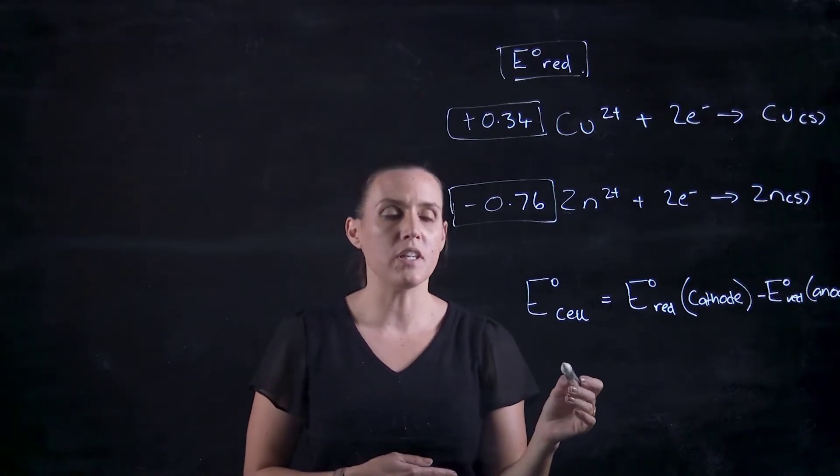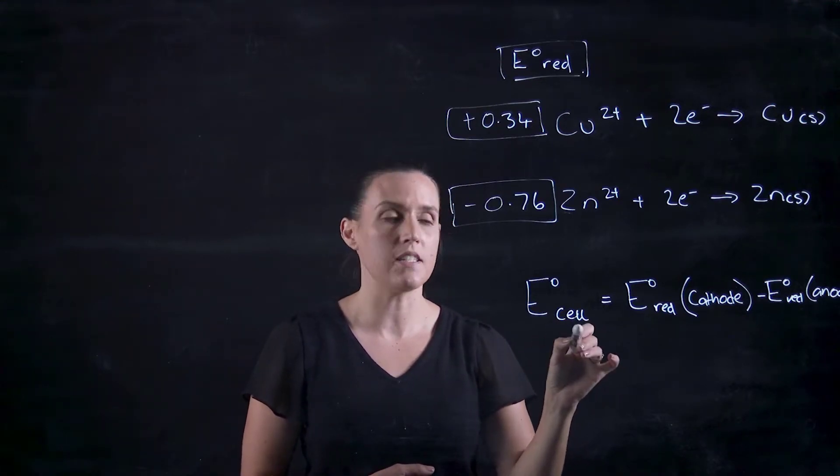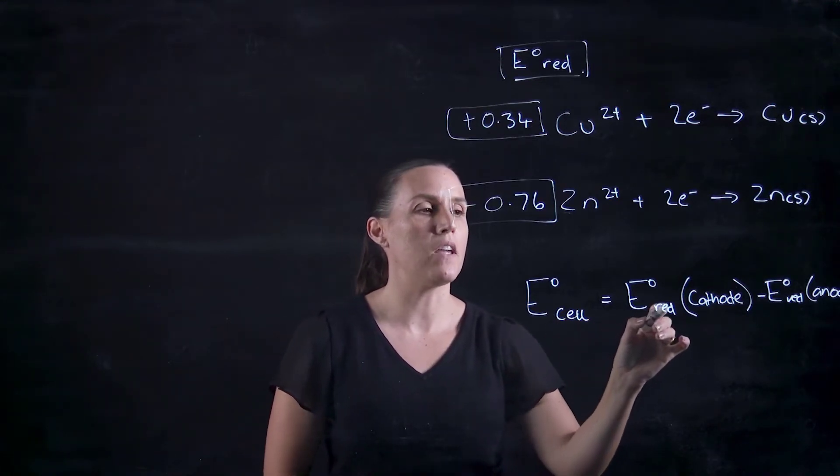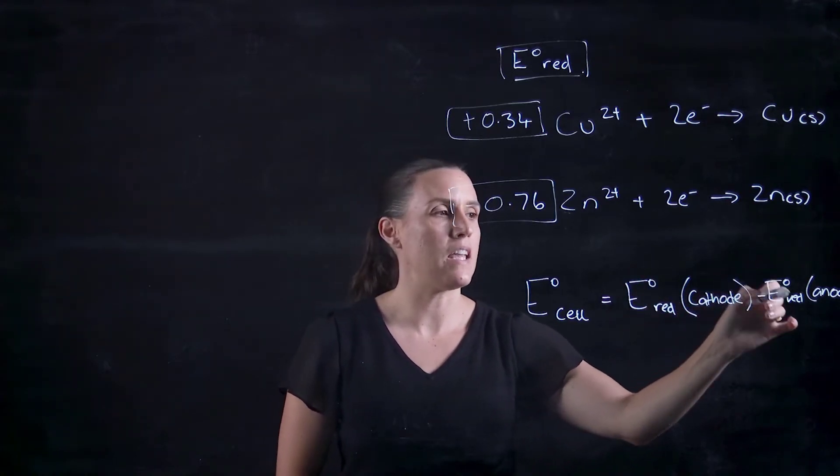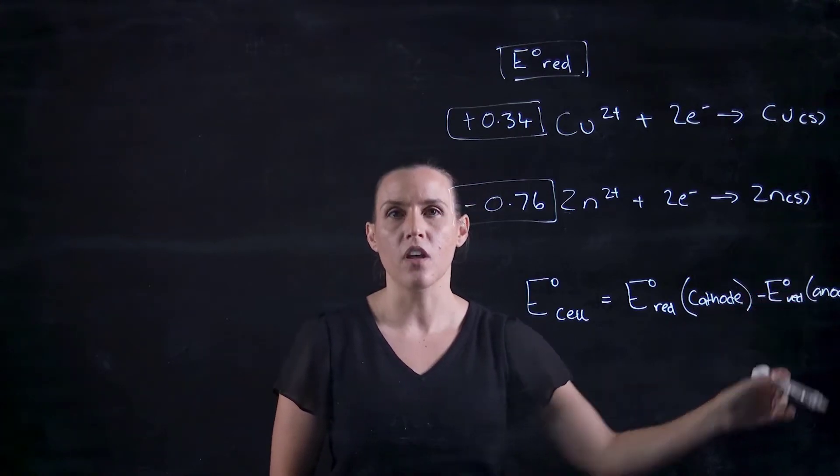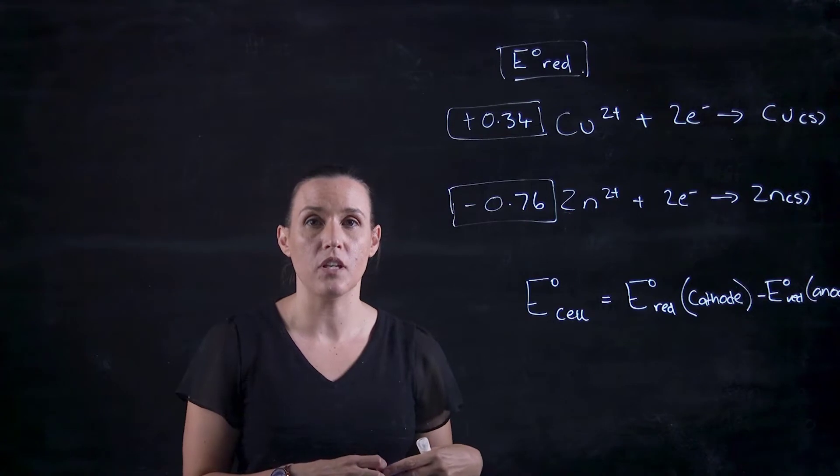The general way of doing it is the total E naught or EMF of the system or the cell would be the E naught for the reduction of the cathode minus the E naught of the reduction of the anode. We don't need to do anything more than just picking out those values and putting them together.